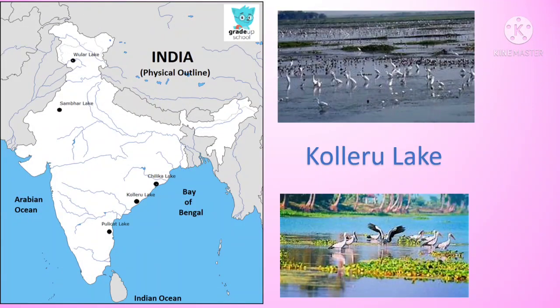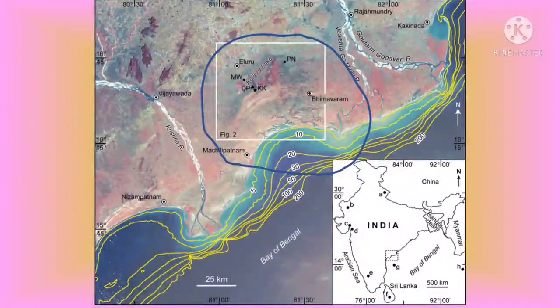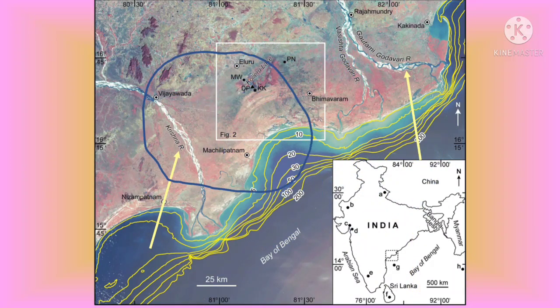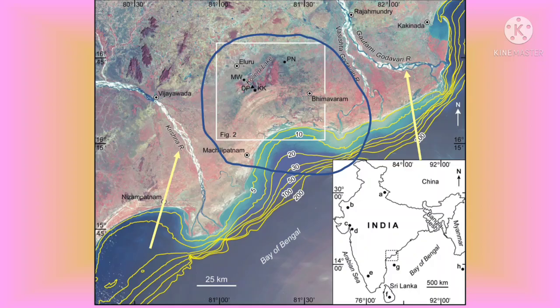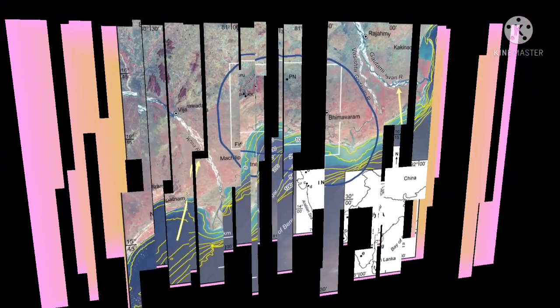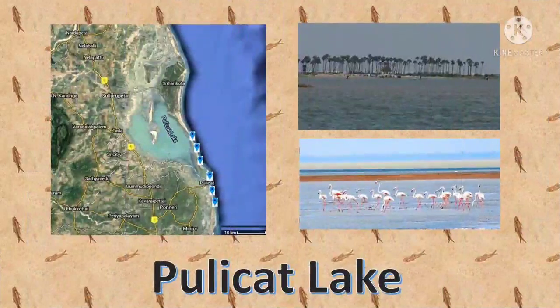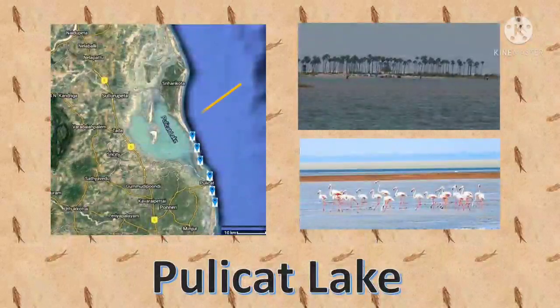There are three major lakes in the eastern coastal plain, which you can observe on the Indian map. The first is Kolleru lake, situated between the Krishna and Godavari rivers. Another is Pulicat lake, which is formed by salt water.